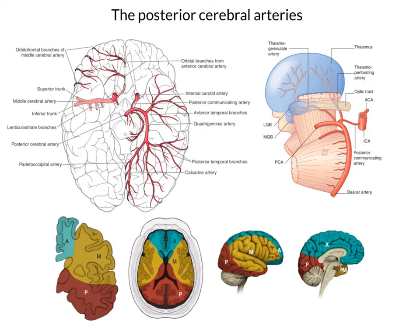To summarise, the posterior cerebral artery supplies the inferior surface of the hemisphere, including the inferior aspects of the temporal lobe and all of the occipital lobes. It also sends branches to the midbrain and is the midbrain's major arterial supply, as well as sending perforating branches up to the thalamus. And that's all we've got to say on the posterior cerebral artery.